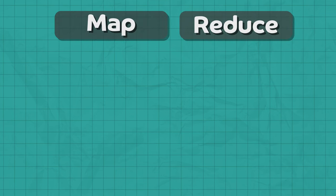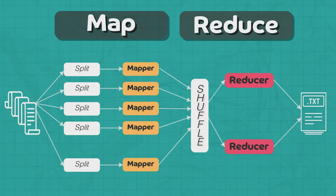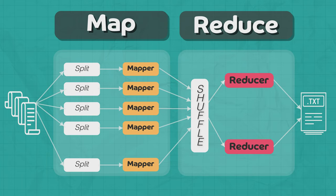MapReduce programs work in two phases, namely Map and Reduce. Map tasks deal with splitting and mapping of data, while Reduce tasks shuffle and reduce the data.